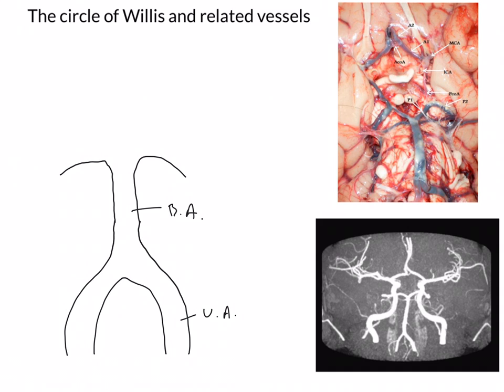The basilar artery splits into two to form the two posterior cerebral arteries. These are the posterior cerebral arteries, formed as the bifurcation of the basilar artery.